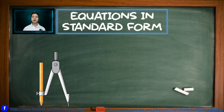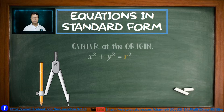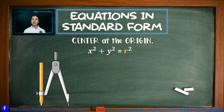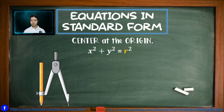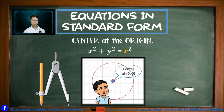Now let's proceed with our main topic — the standard equation of a circle, or the standard form of a circle. We begin with the center at the origin. A circle in standard form with the center at the origin uses the equation x squared plus y squared equals r squared. The origin has the coordinate at the point (0, 0), so that is where the center is.